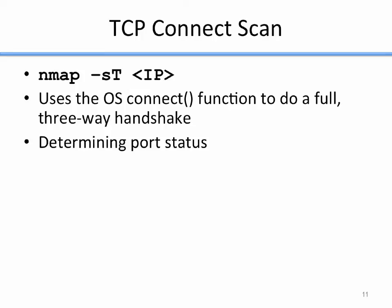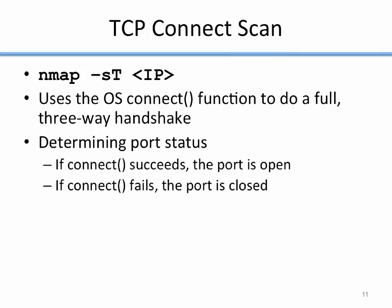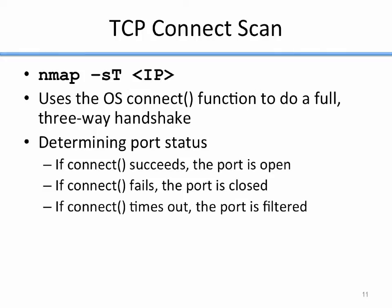When NMAP does this, the response from connect determines the port status. If connect succeeds, the port is open. If connect fails, the port is closed. If connect times out, the port is filtered. The connect function from the operating system simply tells us the status of the port.